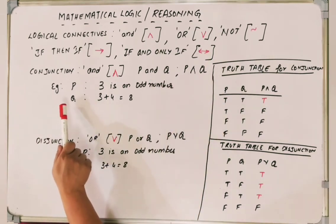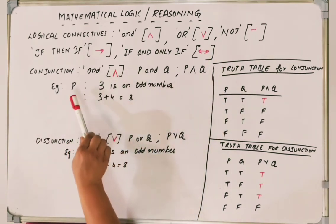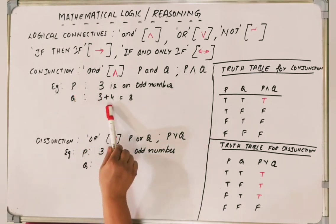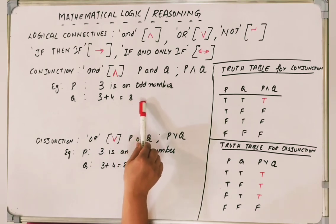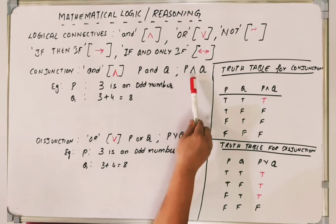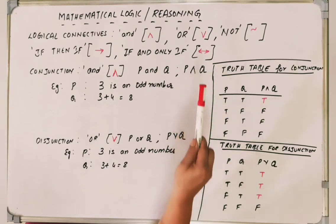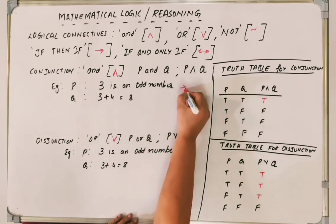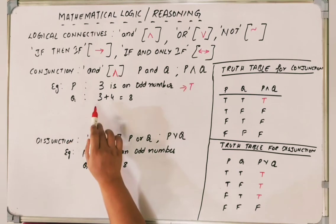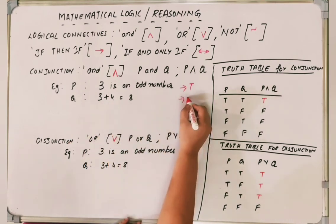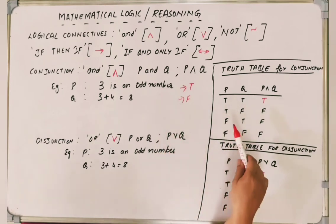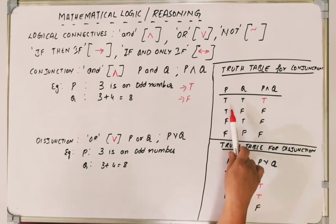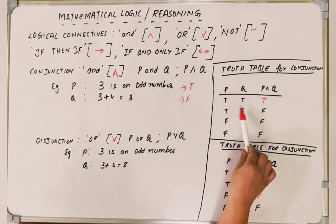For conjunction — which is nothing but AND — we have two statements P and Q. P is '3 is an odd number' and Q is '3 + 4 = 8'. These two statements can be connected with AND, written as P conjunct Q. 3 is an odd number — this is true. 3 + 4 = 8 — this is false.